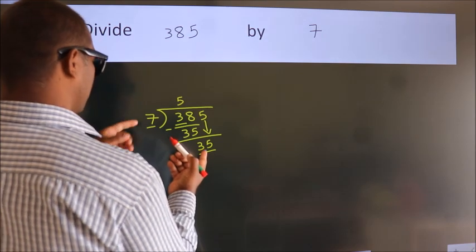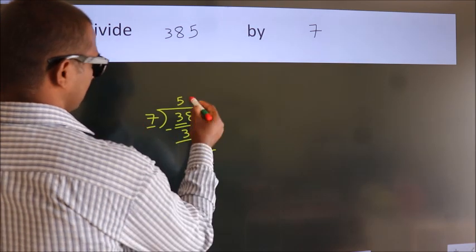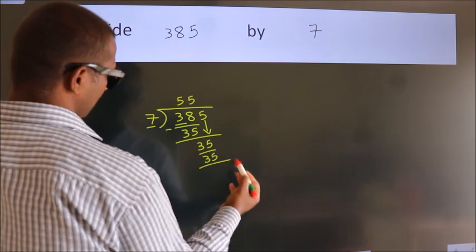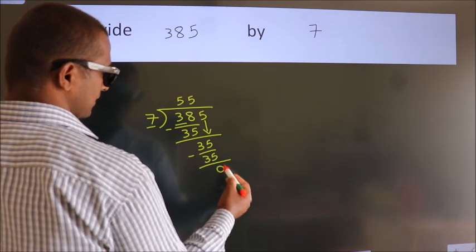When do we get 35 in 7 table? 7 fives, 35. Now, we subtract. We get 0.